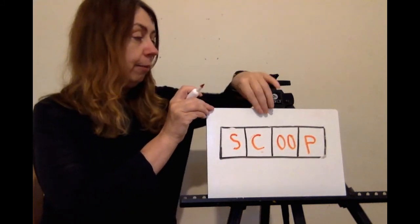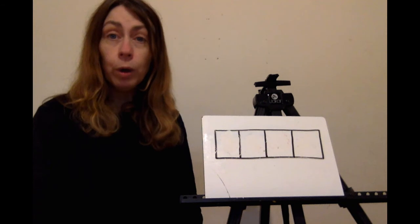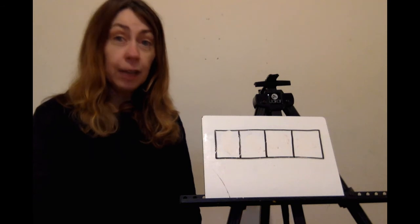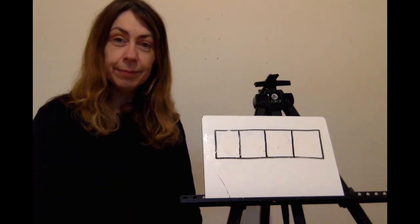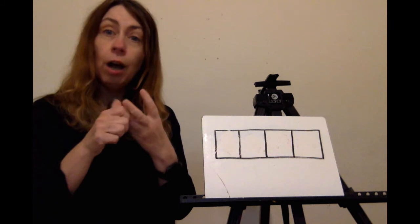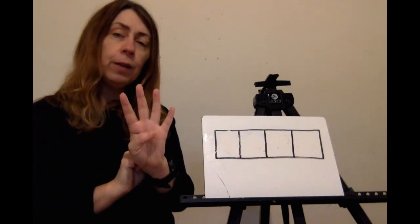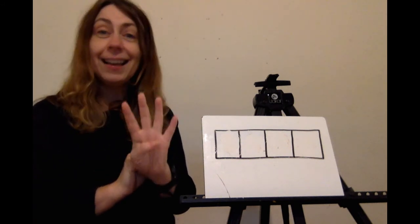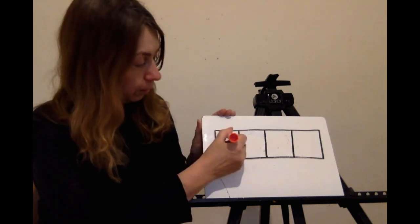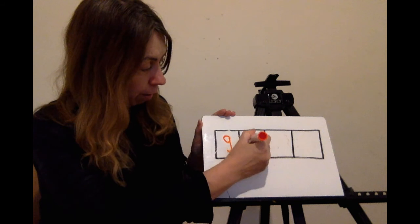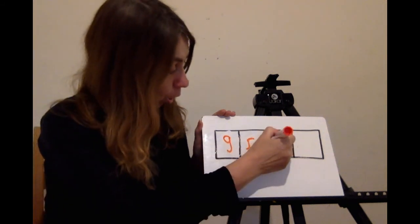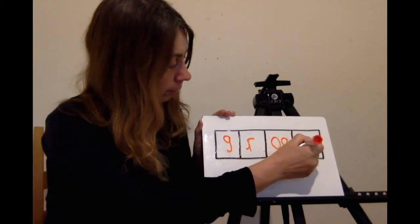Let's write another word now. This word is groan. The boy gave a groan when he fell off his bicycle. Can you say the word groan? Let's use thread fingers to help us write that word. G, R, oa, N — groan. How many phonemes has groan? Yes, four.